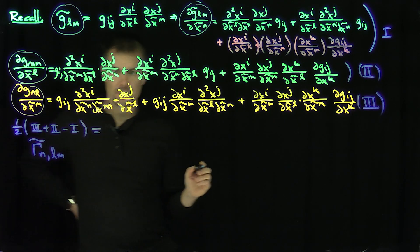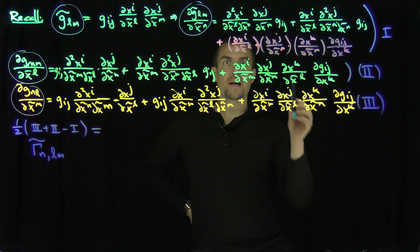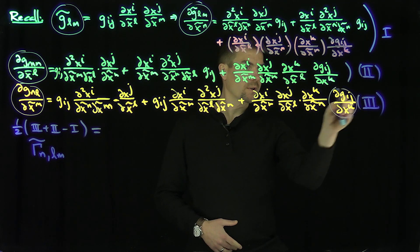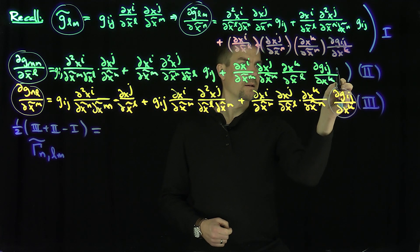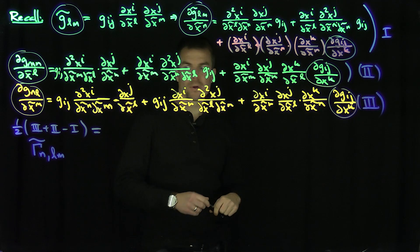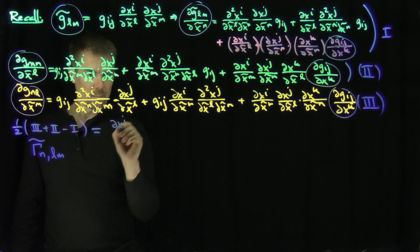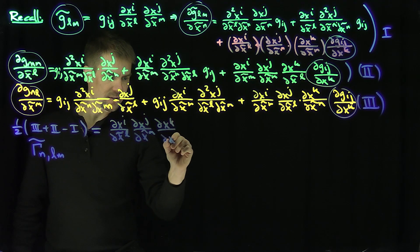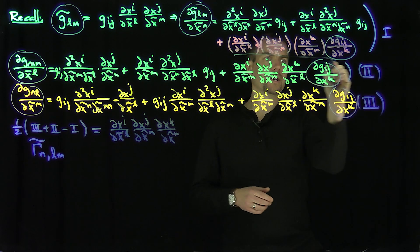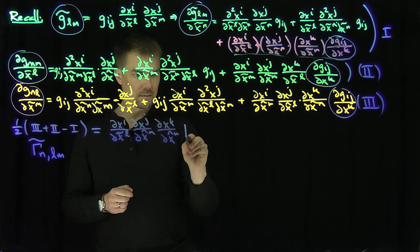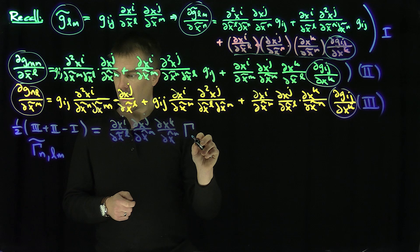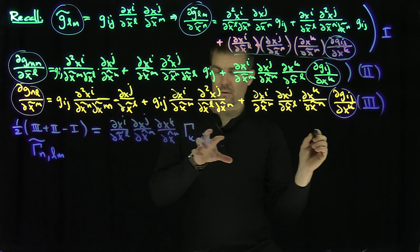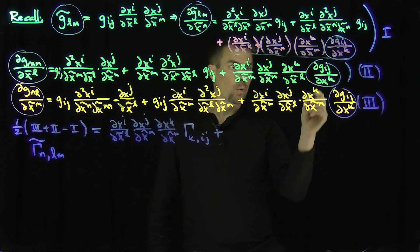On the right-hand side, let's think about what these terms give us. I can pull out a factor of ∂X^I/∂X̃^L times ∂X^J/∂X̃^M times ∂X^K/∂X̃^N — that corresponds to those terms. And if I pull those out, I'll have a Γ^K_IJ — with K as the upper index.